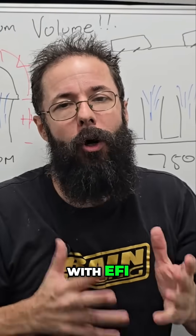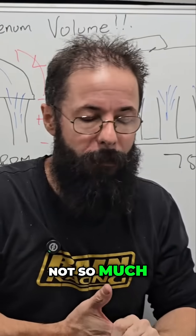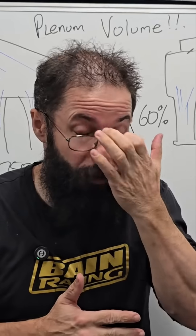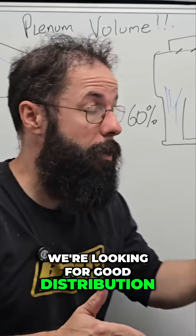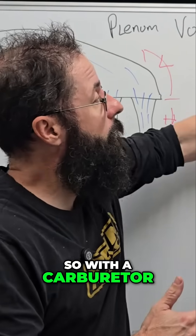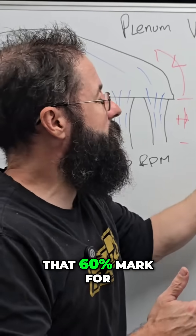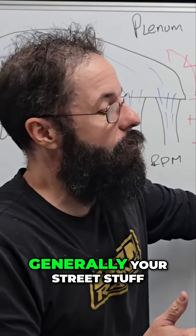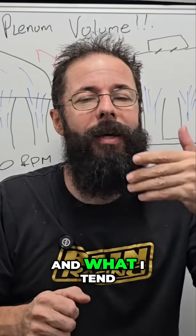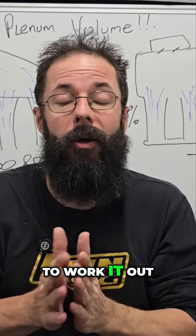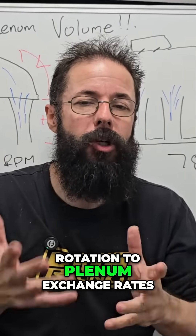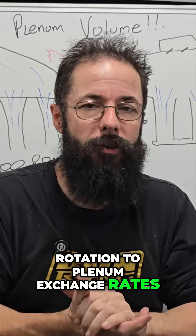With EFI, signal is not so much of a concern, but we're looking for good distribution. With a carburettor, that 60% mark for generally street stuff seems to be a good sweet spot. What I tend to work it out on is degrees of rotation to plenum exchange rates.